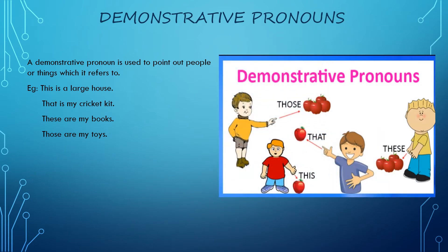Demonstrative pronoun. A demonstrative pronoun is used to point out people or things which it refers to. It is basically used to point out people and things. A few demonstrative pronouns are: this, that, these, and those.